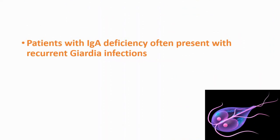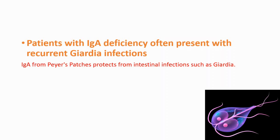Patients with IgA deficiency often present with Giardia infections. Giardia is a parasite, and the reason you get this infection is because IgA from Peyer's patches normally protects against intestinal infections such as Giardia.